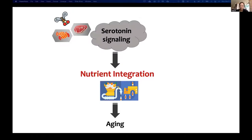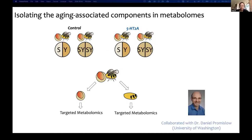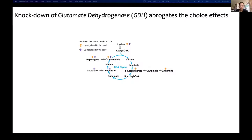Where serotonin doesn't change the way flies interact with the food environment, it does have significant influence on lifespan — which makes me think that 5HT2A might alter nutrient integration inside the body, and changes at that level might be sufficient to affect aging. To investigate this, we used metabolomics to examine metabolic changes in flies, studying both control flies and 5HT2A mutants in heads and bodies. This work was collaborated with the Daniel Promislow lab at the University of Washington. We found a consistent upregulation of some TCA intermediates and amino acids induced by choice in wild types, which is fully abrogated in mutants.